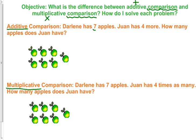Let's start with the first. In additive, Darlene has seven apples. I'm going to circle seven because that's one number that I'm going to need. Juan has four more, so I'm going to circle four, and 'more' tells me I need to add. How many does Juan have? This comparison means that I need to use the information I have for that first person before I find anything else.